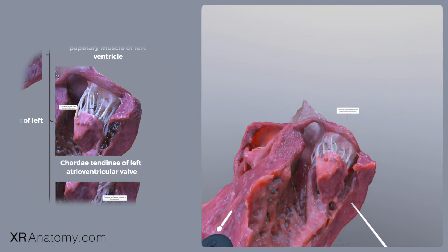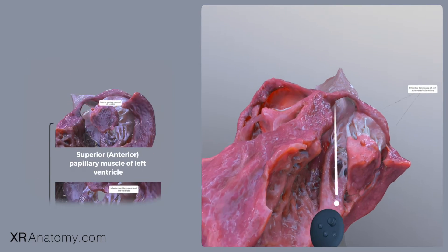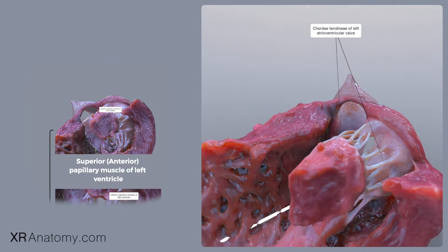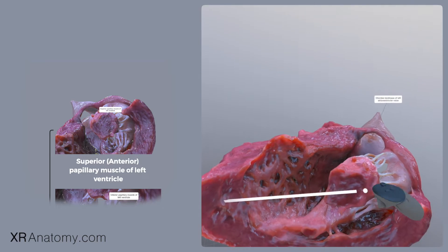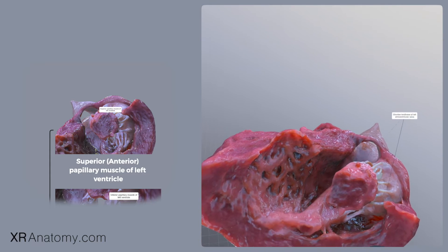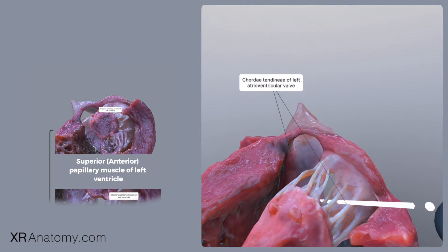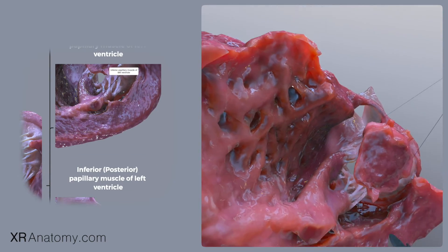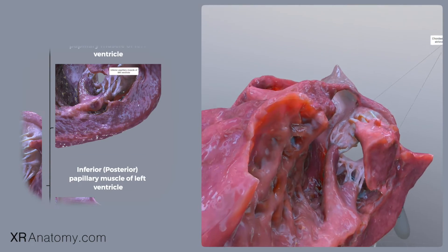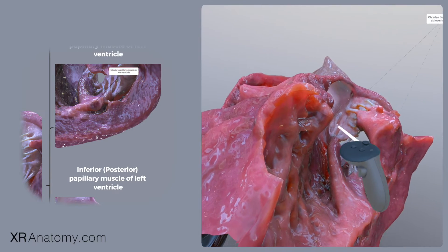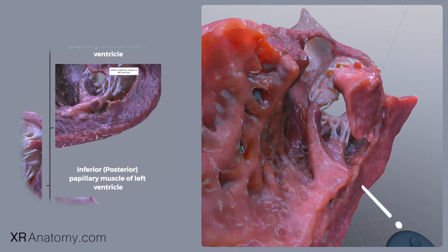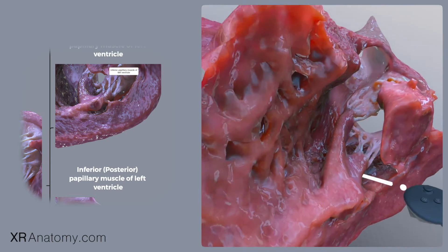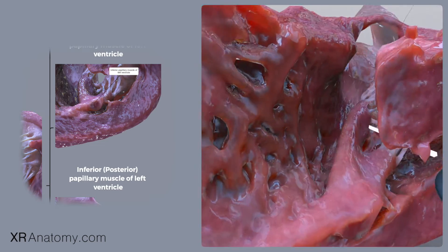The first is the anterior papillary muscle, also known as the superior papillary muscle. It is the most substantial of the two and has its origin on the lateral wall of the left ventricle, attaching to the mitral valve through fibrous cords. The second is the posterior or inferior papillary muscle, which, though smaller than its anterior counterpart, serves an equally important function. It emerges from the inferior wall of the left ventricle, also attaching to the mitral valve through fibrous cords.